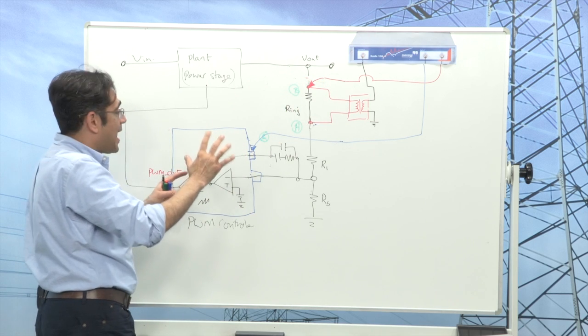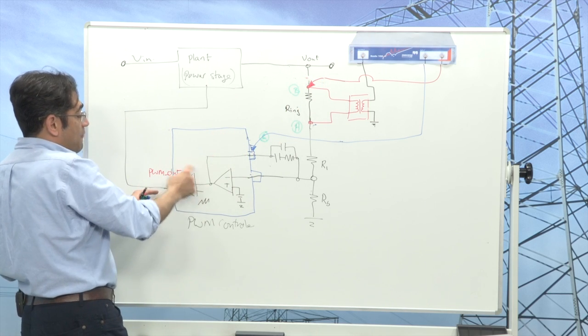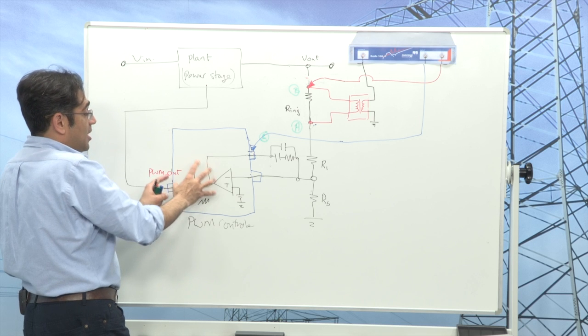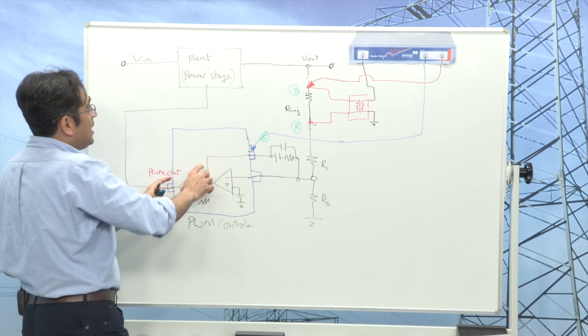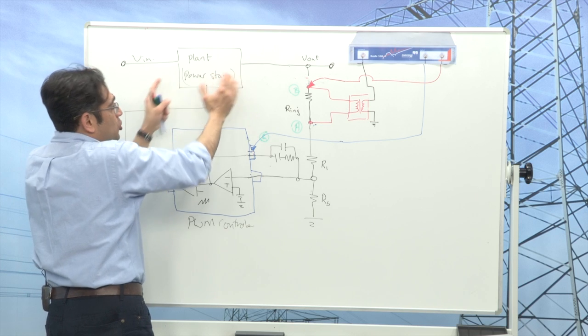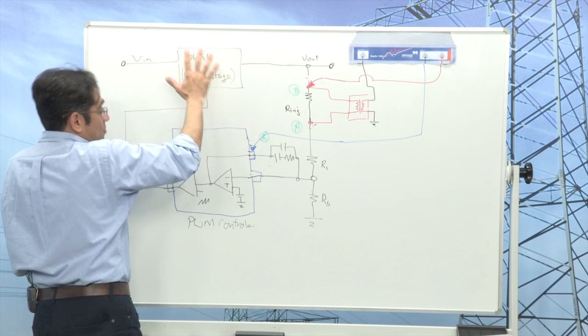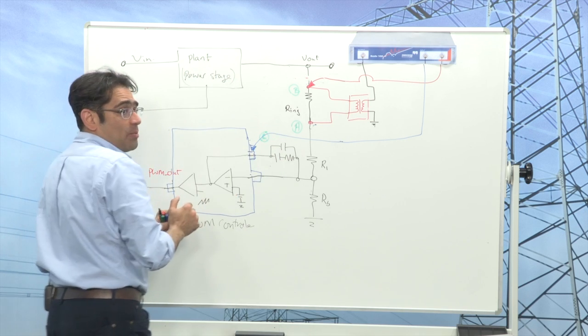So what we are actually looking at is the gain of the PWM stage inside the chip, the PWM gain and the plant. So in total I now expect to see the plant and the PWM without the compensator.